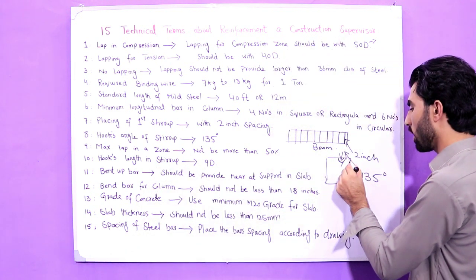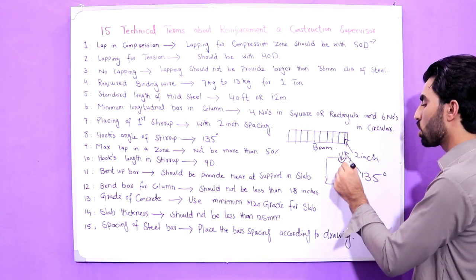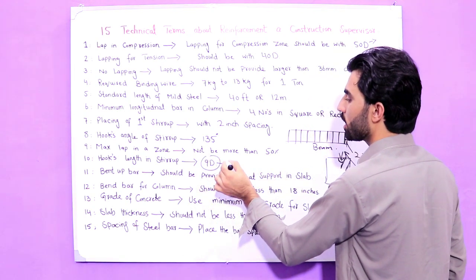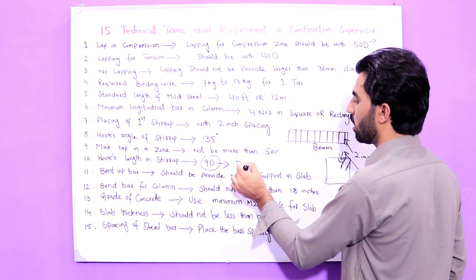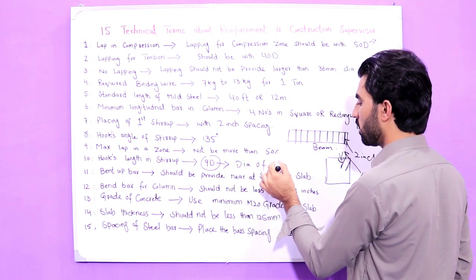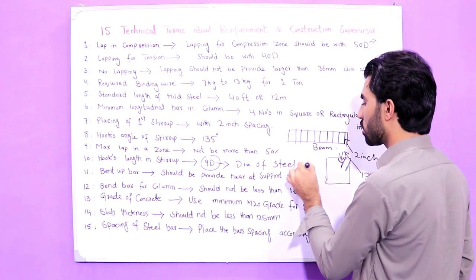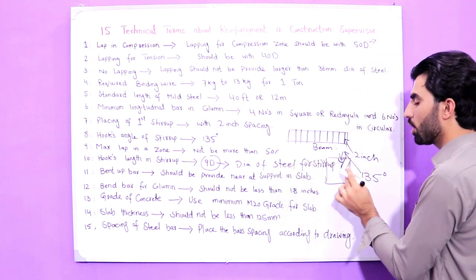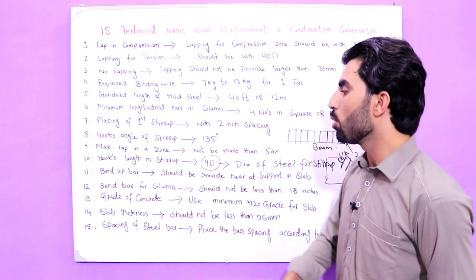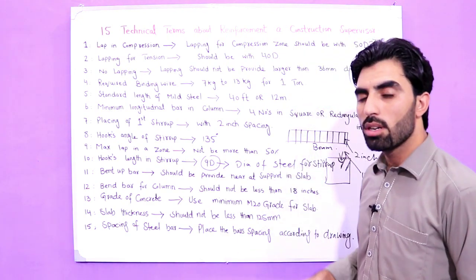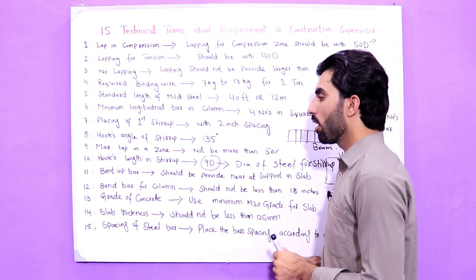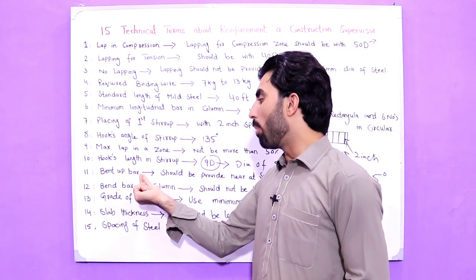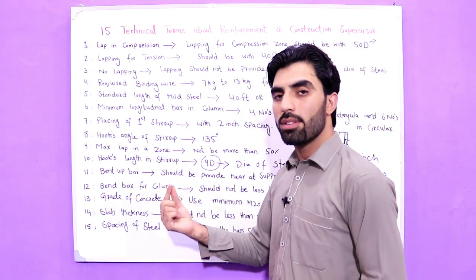The tenth term is hook length in a stirrup. The hook length in a stirrup should be 9D, where D is the diameter of the steel bar used for the stirrup. Using this formula — 9 multiplied by D — we can calculate the hook length.